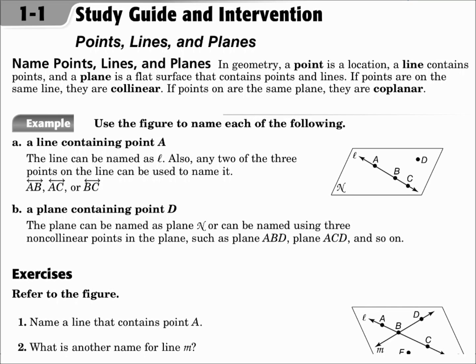Name points, lines, and planes. In geometry, a point is a location, a line contains points, and a plane is a flat surface that contains points and lines.